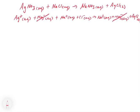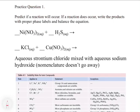So we cross out our spectators — the NO3⁻ goes away, the Na⁺ goes away. So we're left with our net ionic equation: Ag⁺ aqueous + Cl⁻ aqueous → AgCl solid. And that's our net ionic equation.